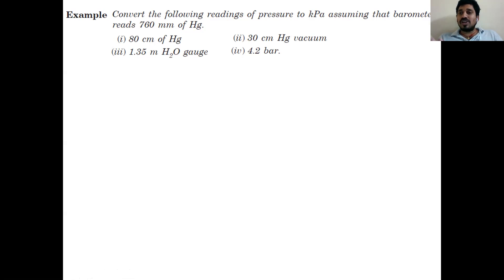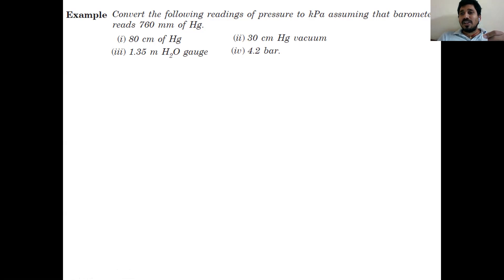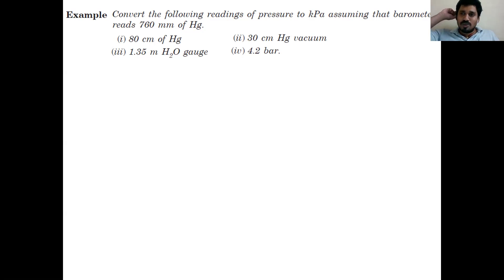Last class I discussed clearly that the pressure unit is Pascal, which is nothing but Newton per meter square. With the help of a barometer, we understood that at sea level the height of the liquid in a glass tube when using mercury is 760 mm. Using that 760 mm and the hydrostatic law, we calculated atmospheric pressure as 101325 Pascal.